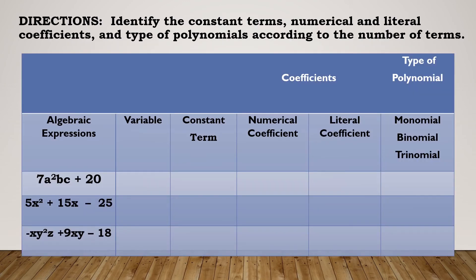Now let's try answering some examples. We're going to identify the constant terms, the numerical and literal coefficients, and the type of polynomial according to degree. Example 1: 7a²bc + 20, which has variables a, b, and c. Example 2 has only one variable x, and Example 3 has variables x, y, and z.